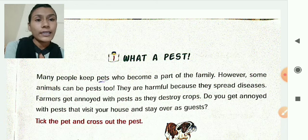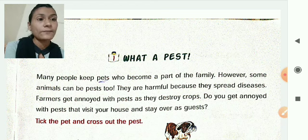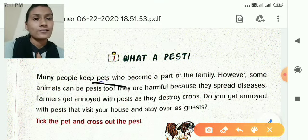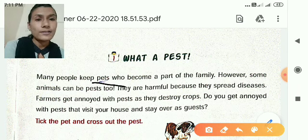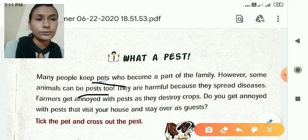Many people keep pets who become a part of the family. However, some animals can be pests. They are harmful because they spread disease. Now you know what is the difference between pets and pests. Pets can become a part of the family, but pests, no. Why? Because they are harmful and they spread disease.